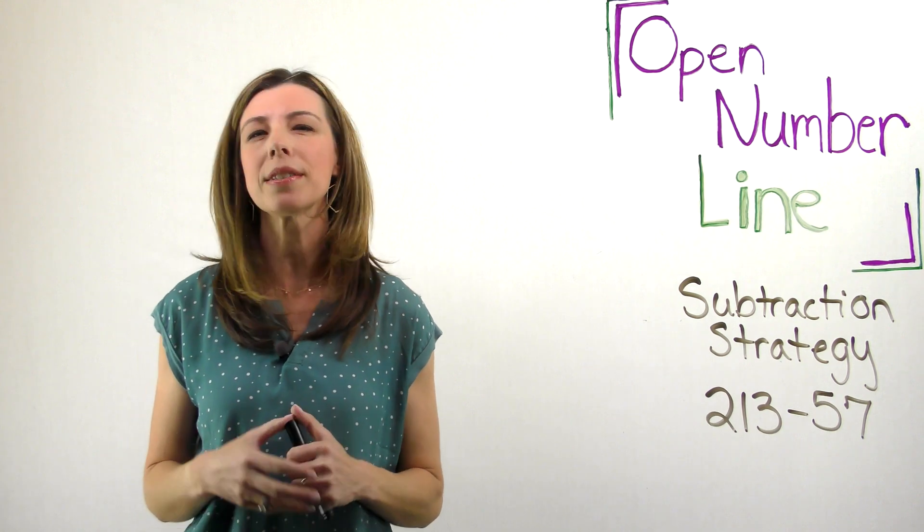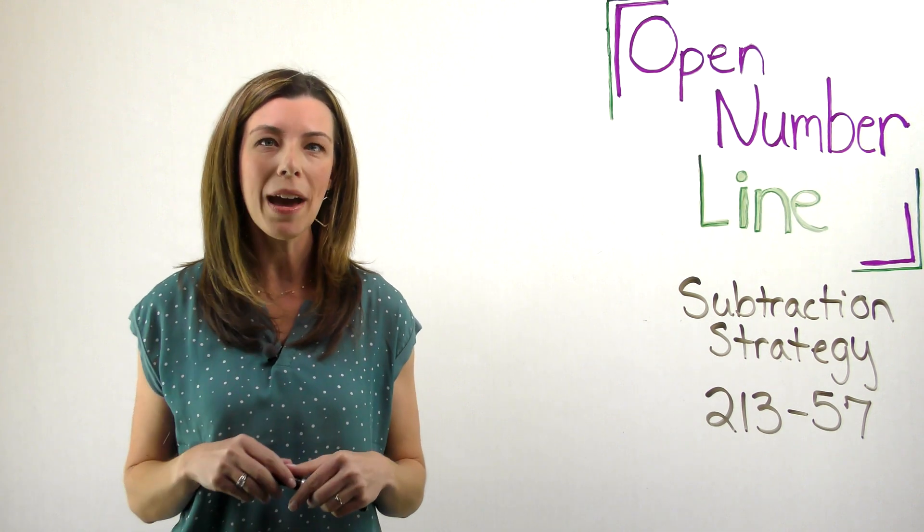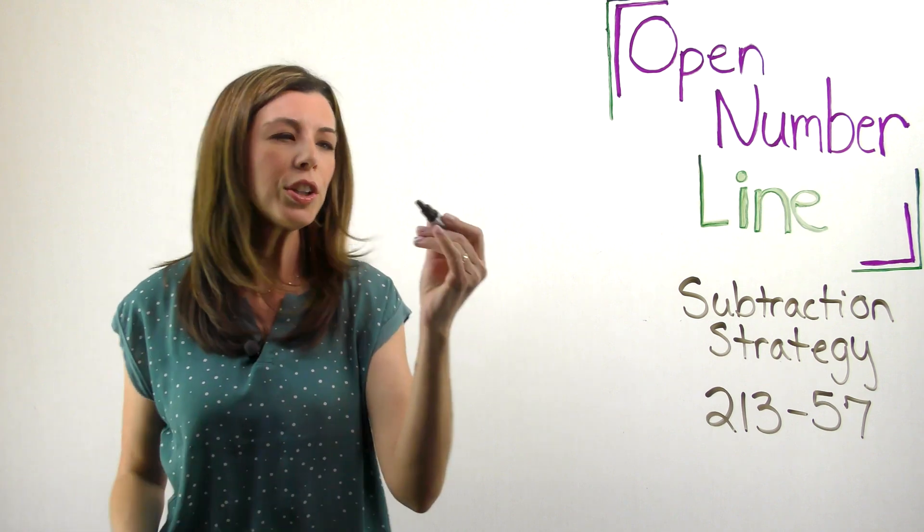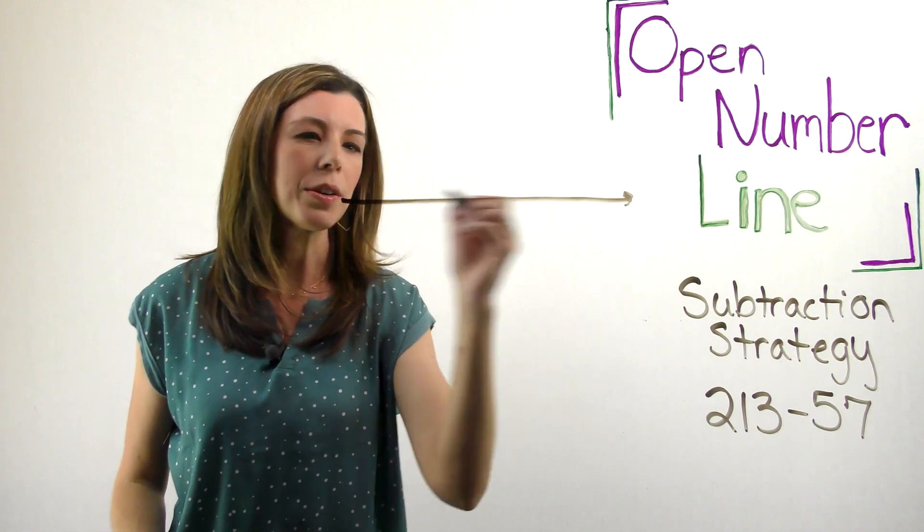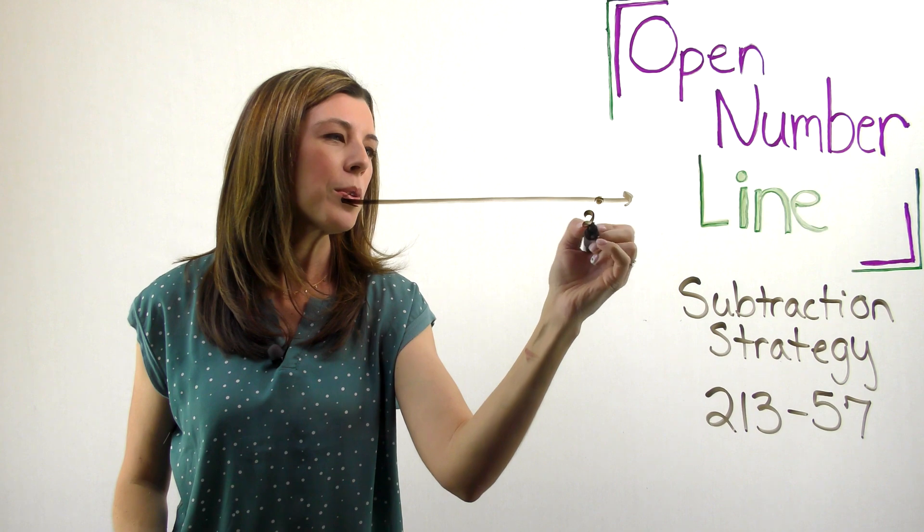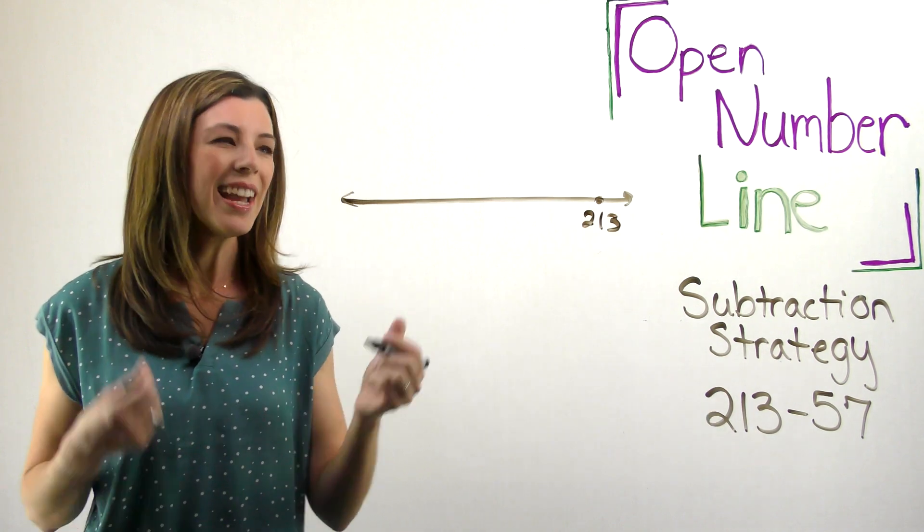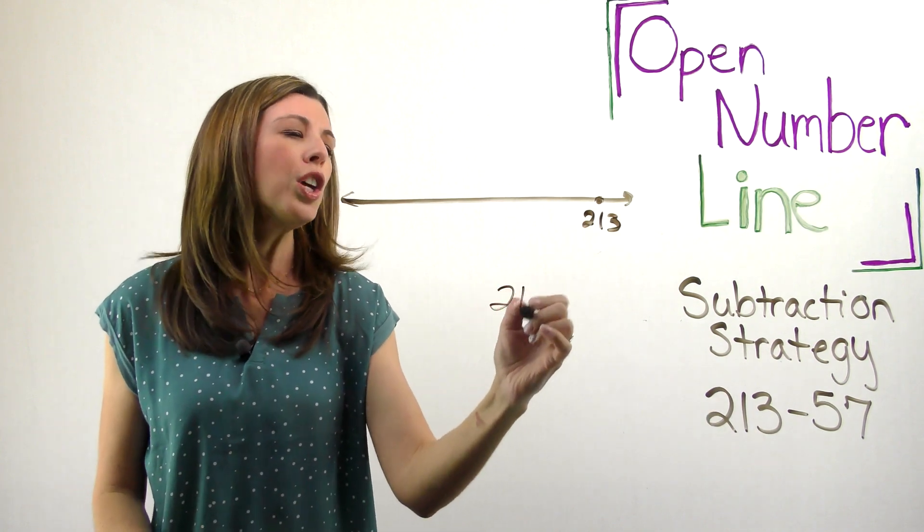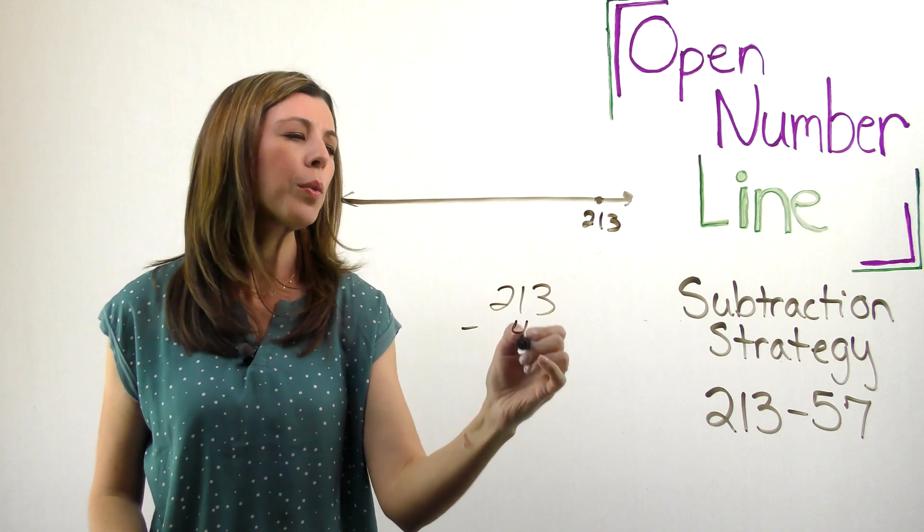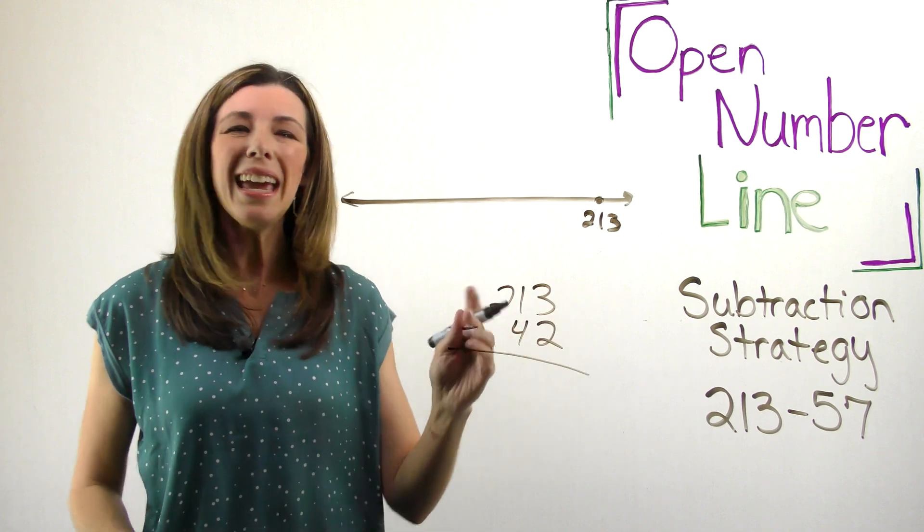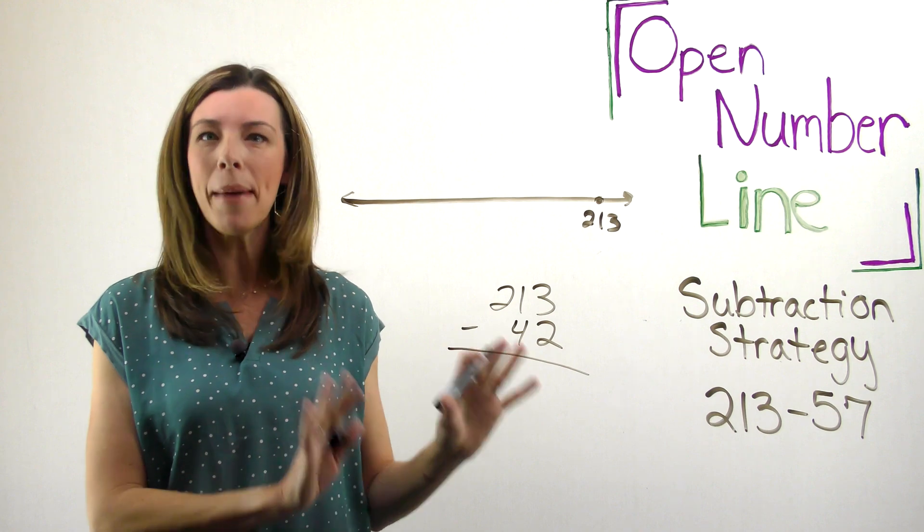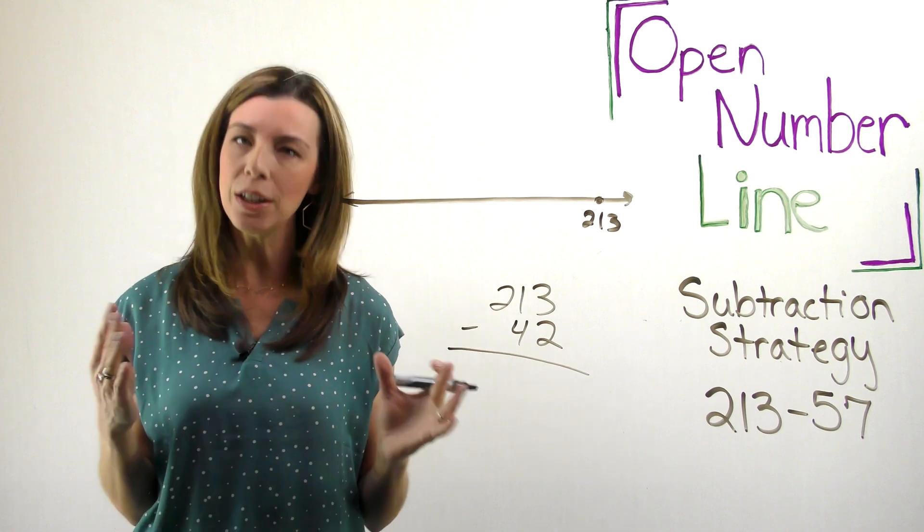Another thing I want to tell you is that sometimes I get students that will do math on the side. Here's what I mean. They're using the open number line strategy and they're like, okay, I'm at 213 and I know I need to subtract 57 and they'll do something like this. Well, 213, what if I took away 42? If I have to do any math, I'm working too hard. I need you to be lazier.